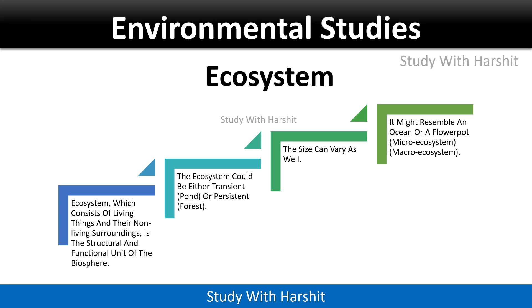Ecosystem consists of living things and their non-living surroundings. It is the structural and functional unit of the biosphere. The ecosystem could be either a pond or a forest. The size can vary as well — it might resemble an ocean or a flowerpot. There are micro ecosystems and macro ecosystems.